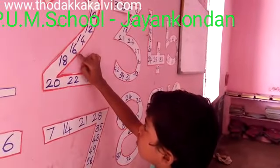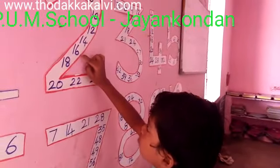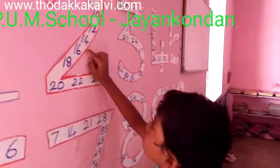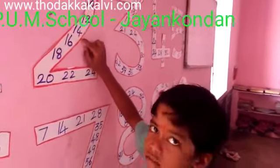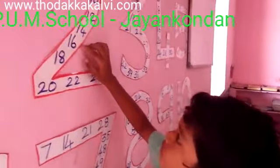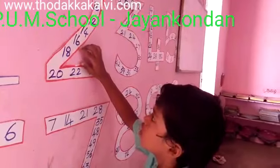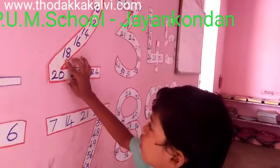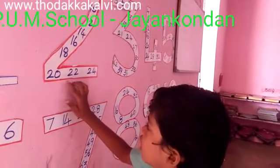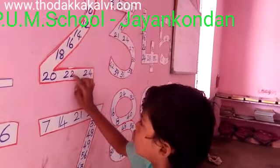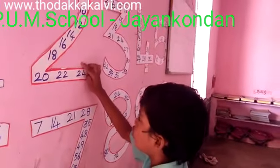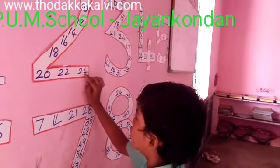7, 2's are 48. 6, 2's are. 8, 2's are 60. 9, 2's are 80. 10, 2's are 20. 12, 2's are 24.